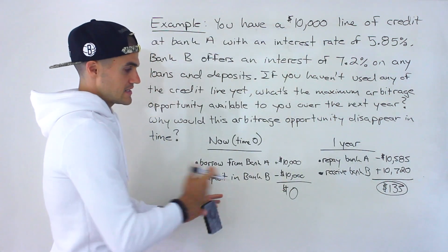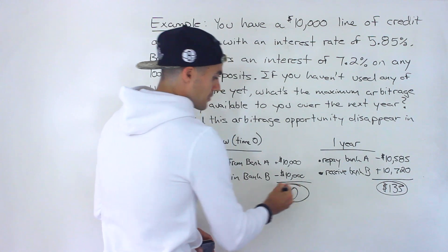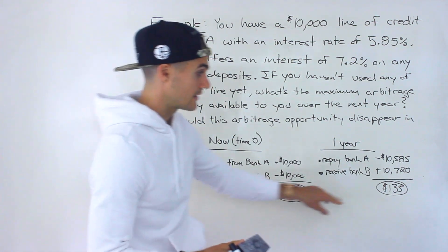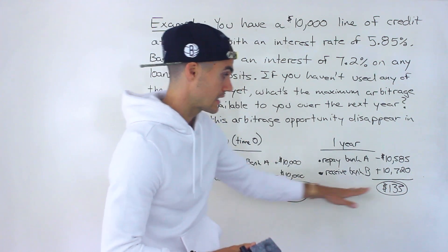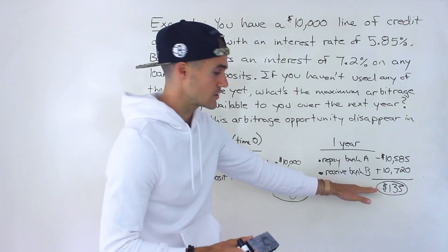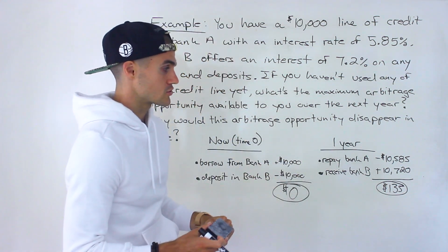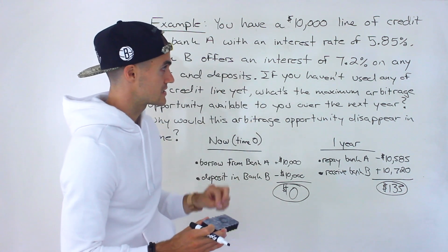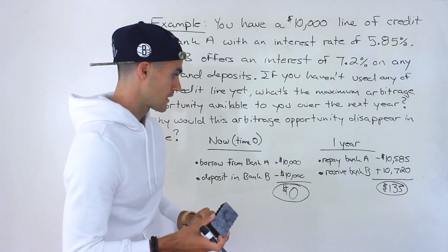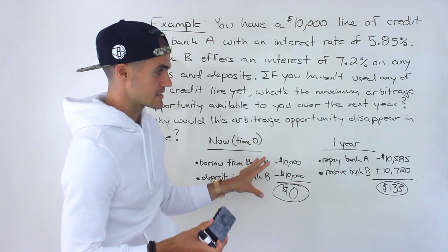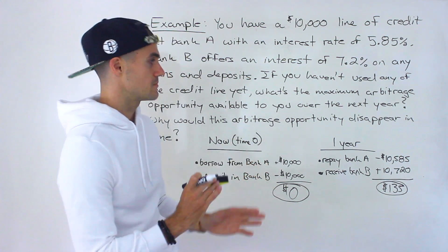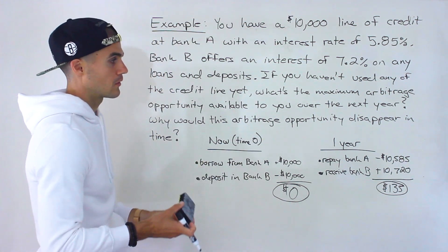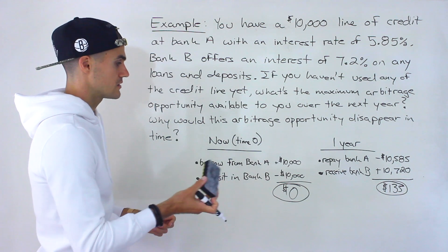This represents an arbitrage opportunity because you spent zero dollars and received money — it's a risk-free transaction. This usually doesn't exist in the market, especially between big banks. But if it does exist in certain transactions, it disappears quickly. That's actually the second question: why would this arbitrage opportunity disappear in time?